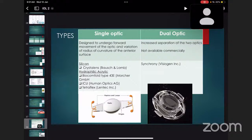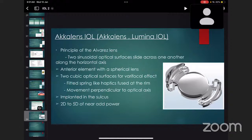In dual optic, it's increased separation of the two optics, not available commercially. Example is Synchrony as shown in the image. Then there's Juvene intraocular lens, accommodative intraocular lens known as Juvene or Lumina IOL. It's based on the principle of the Alvarez lens in which two sinusoidal optical surfaces slide across one another along the horizontal axis. Anterior element with spherical lens and two cubic optical surfaces for varifocal effect. They are fitted with spring-like haptics used at the rim and movement perpendicular to optical axis. These are implanted in the sulcus with two diopter to five diopter of near-add power.